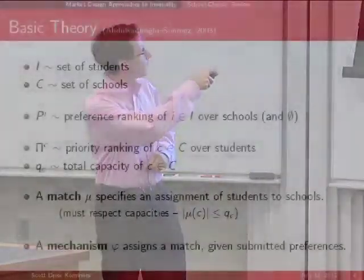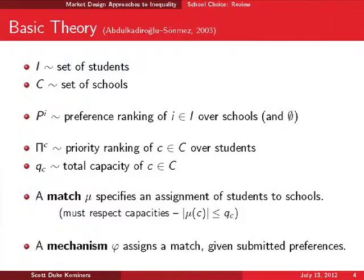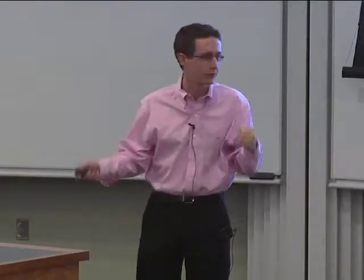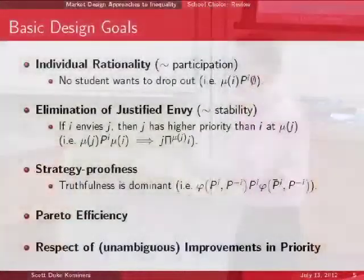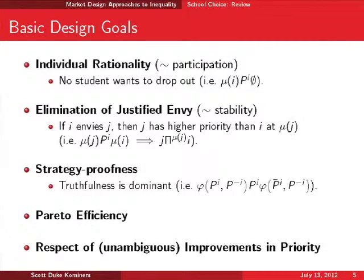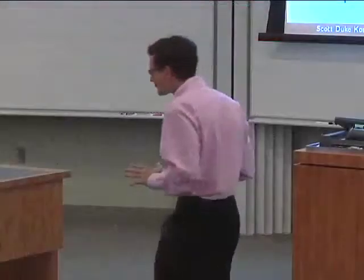Notation: I is the set of students, C is the set of schools. Students have linear preference rankings over schools; schools have linear priority rankings and total capacities. A match specifies the assignment of students to schools while respecting capacities. Our design goals were strategy-proofness, elimination of justified envy, Pareto efficiency — and we saw these are in conflict with each other — and the respective improvements criterion.